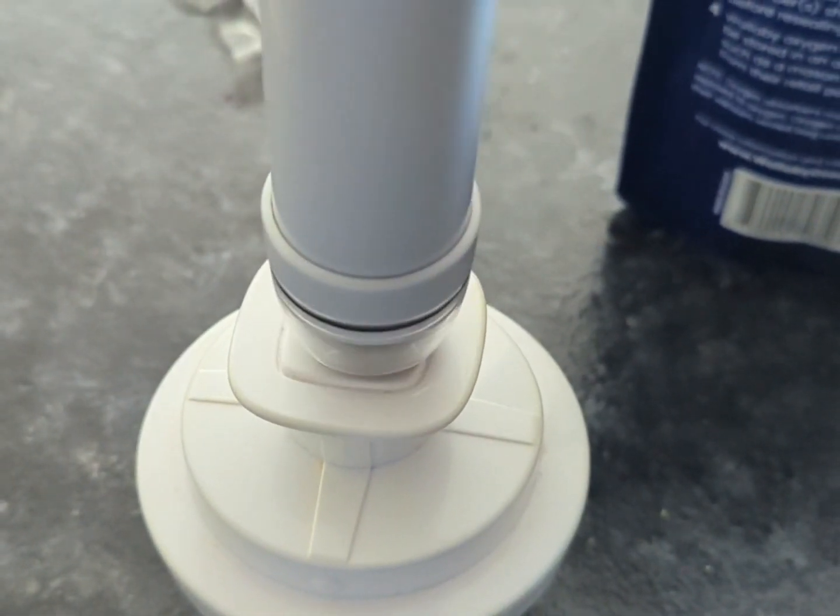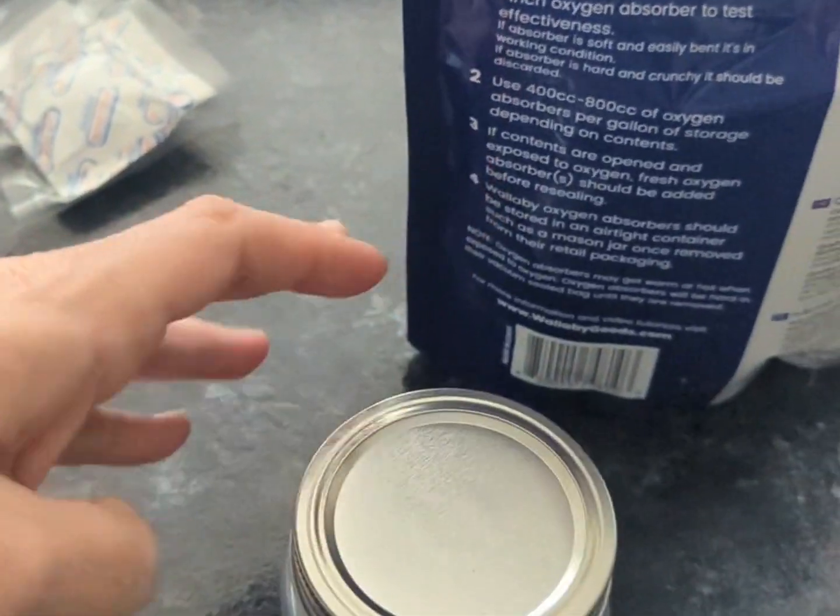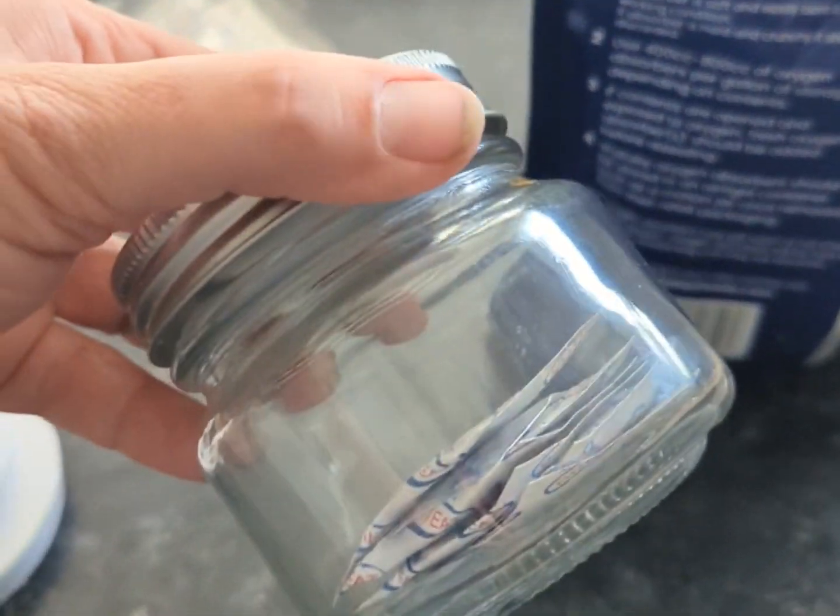Just slip this attachment over the lid and pull out all of the oxygen. A few pumps and you can see the jar is sealed. Put the ring on and you are good to go until you need the oxygen absorbers again.